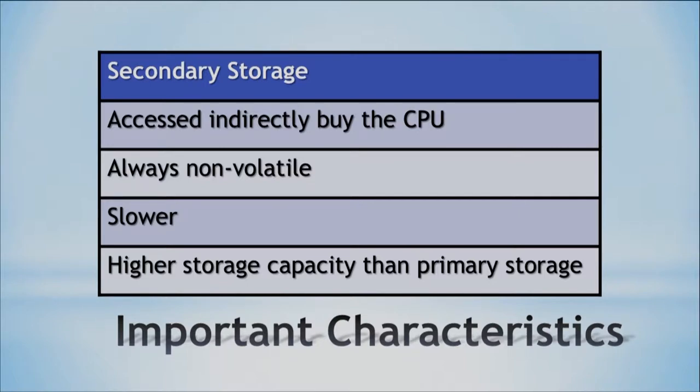Secondary storage also has a higher storage capacity than primary storage. As we learned before, primary storage is, for example, the RAM, which is right by the CPU and is not really that big, because having more RAM is really expensive. So our computers rely on secondary storage. It is accessed indirectly by the CPU because usually it's plugged in as a peripheral to our computer, most of the time.